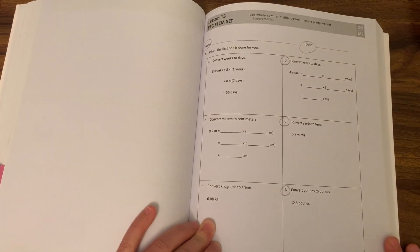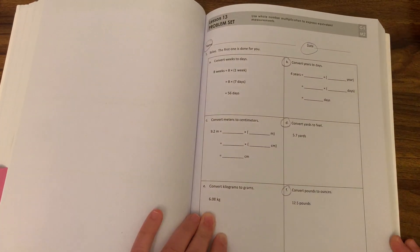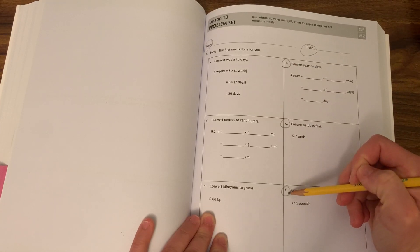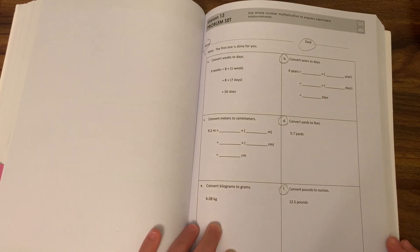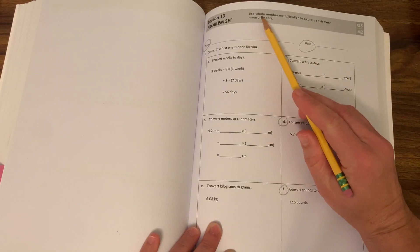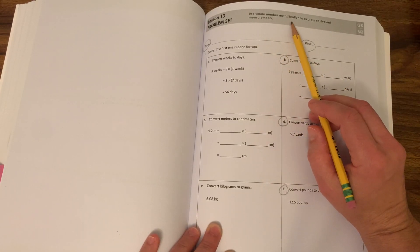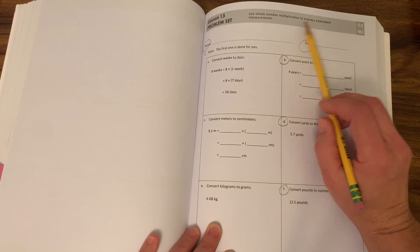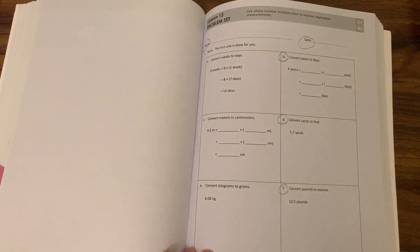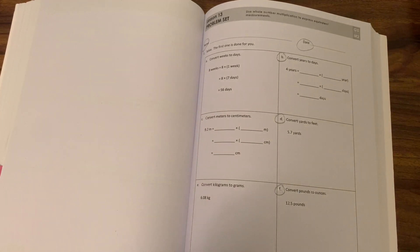As usual, we are not going to do all of the problems. So that is why I circled B, D, and F on this page. You can copy me. Go ahead and circle those three. And I'm going to read the objective: use whole number multiplication to express equivalent measurements. So remember, we're working with conversions and measurements. Let's see if I can zoom in.